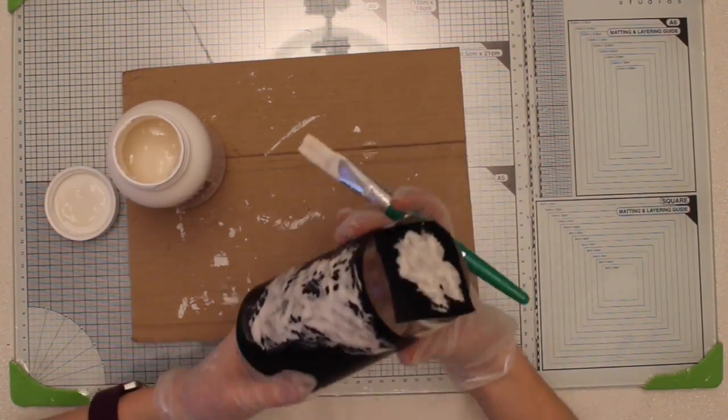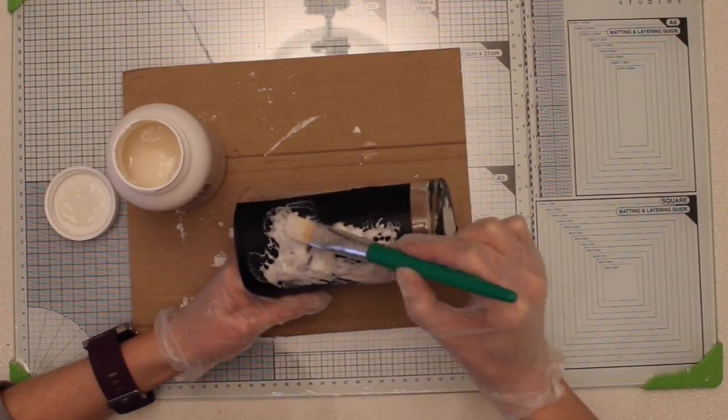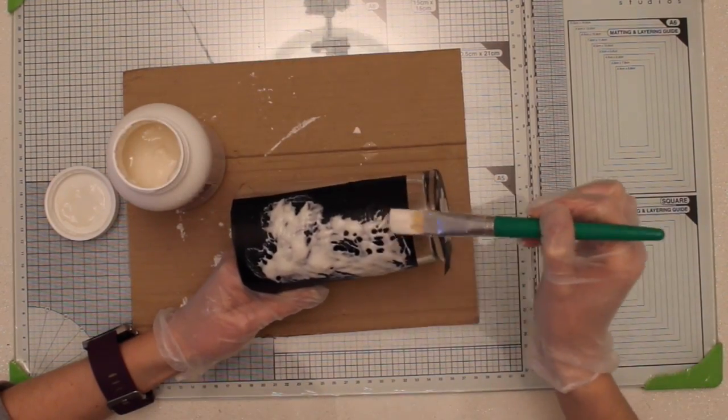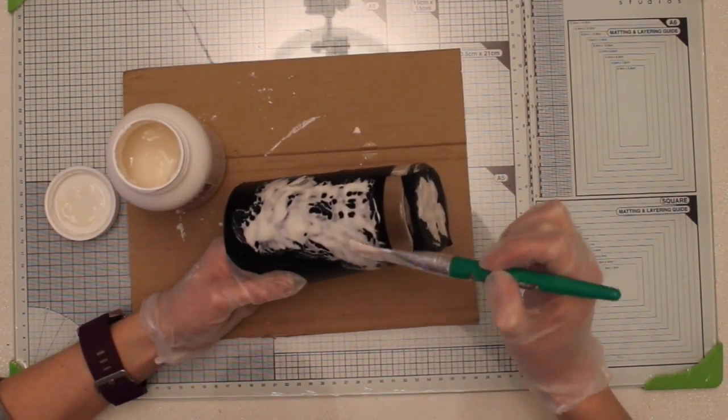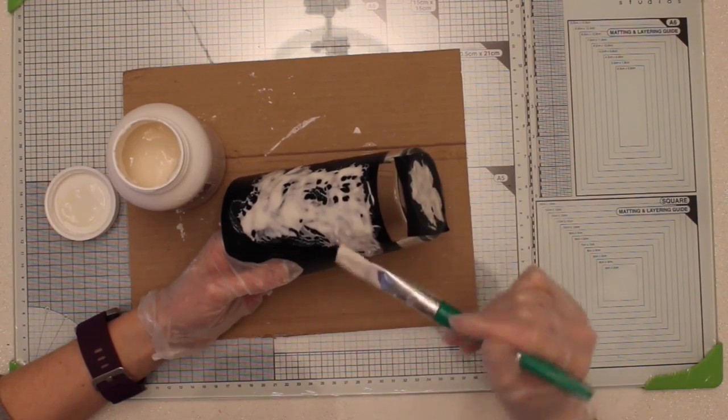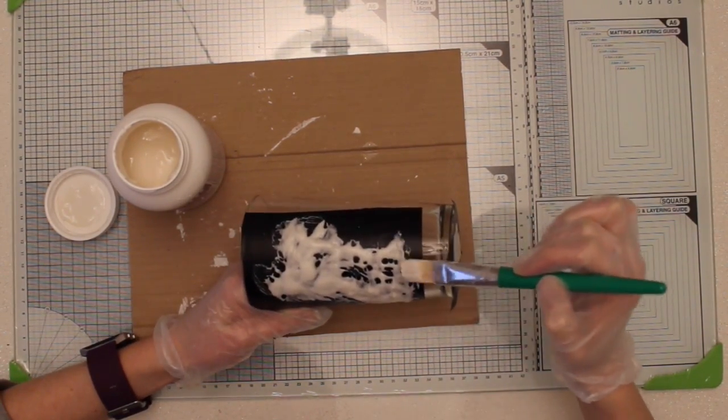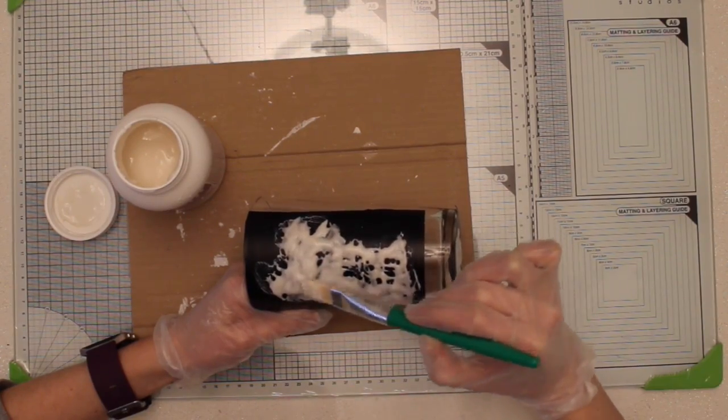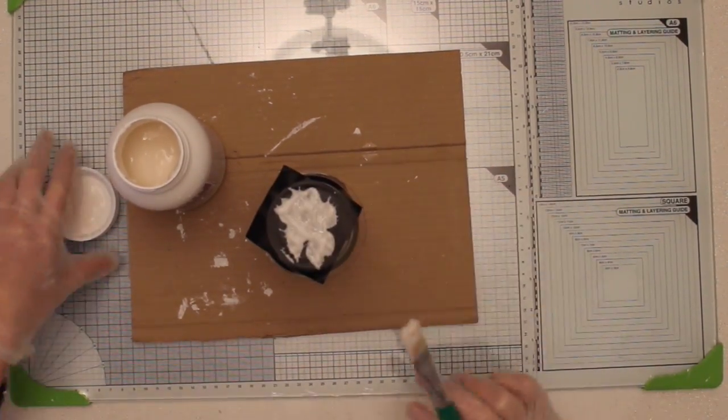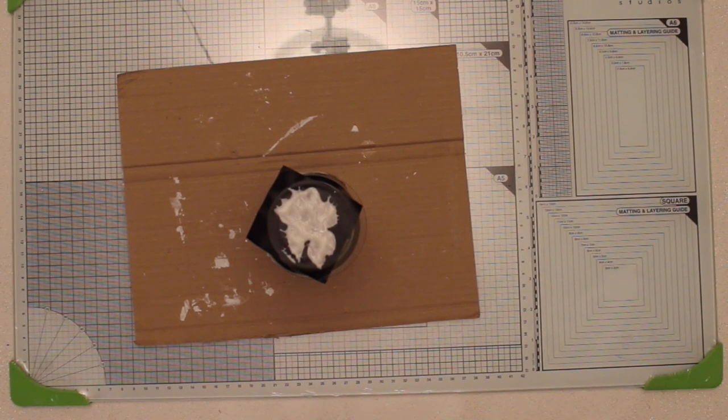I tend to like to add cream so that you can't really see the image underneath. It's a solid block of white but that's just me, I just like to make sure that I've got everything covered and it looks even just to ensure that you've got a really smooth etching.